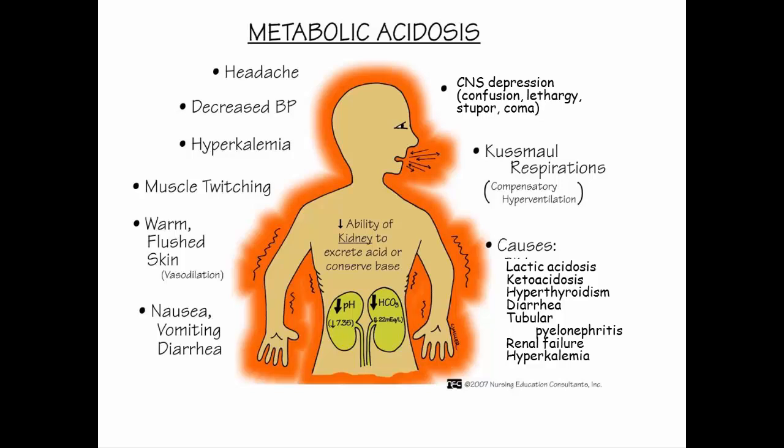Let's start with metabolic acidosis. The pH is too low, and the cause is anything other than respiratory problems. Things like lactic acidosis or ketoacidosis — a buildup of metabolic acids. Hyperthyroidism can cause that buildup, and ketoacidosis is seen in diabetics when they burn proteins for energy and make ketone bodies. Other causes include kidney conditions, diarrhea, or hyperkalemia — too-high potassium levels, which go hand-in-hand with acidosis.